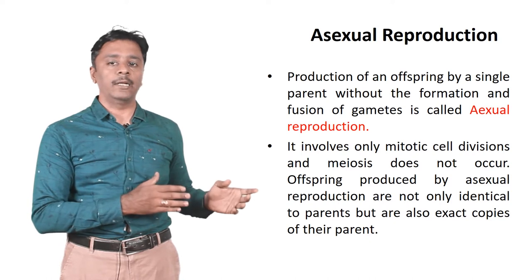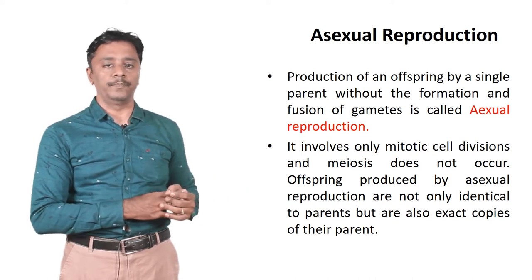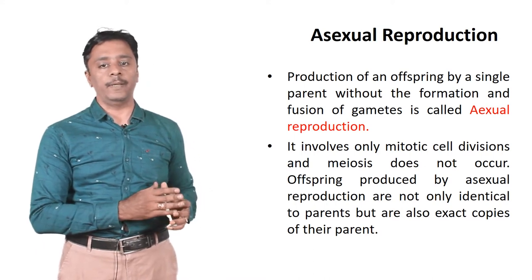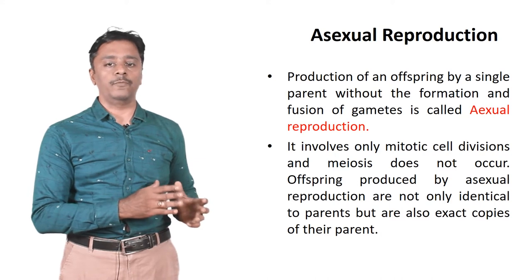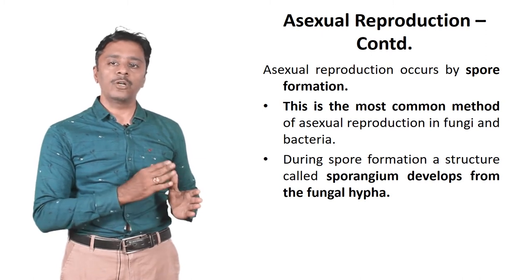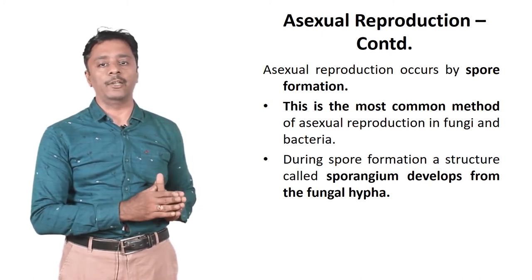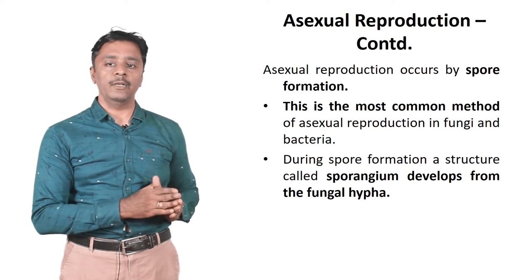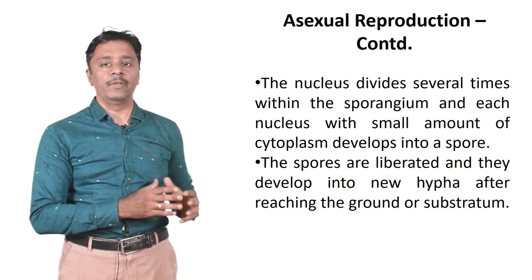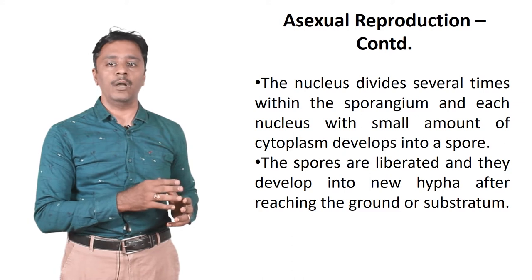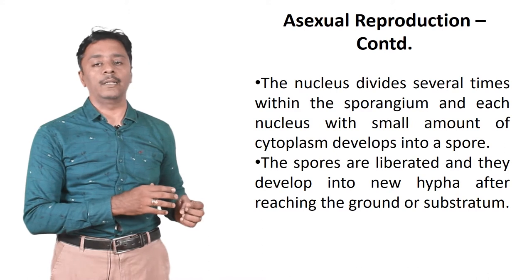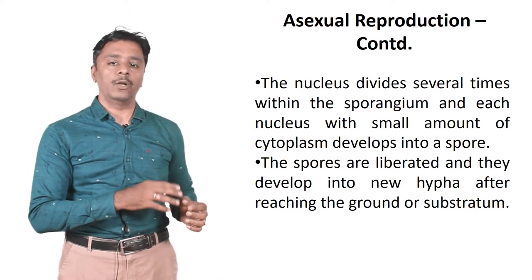Asexual reproduction involves only mitotic cell divisions and meiosis does not occur. Offspring produced by asexual reproduction are not only identical to parents but also exact copies of their parent. Asexual reproduction occurs by spore formation. This is the most common method of asexual reproduction in fungi and bacteria.